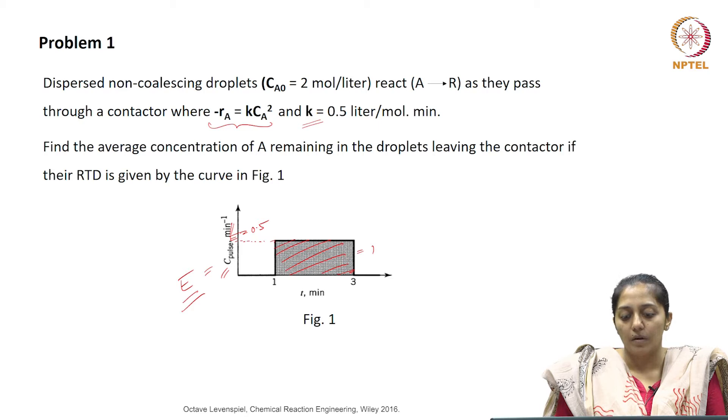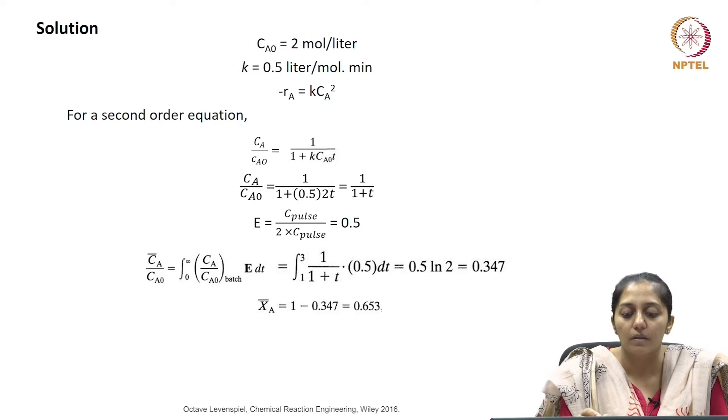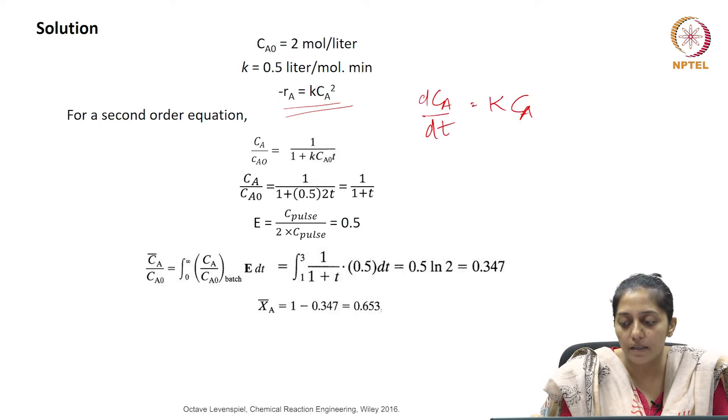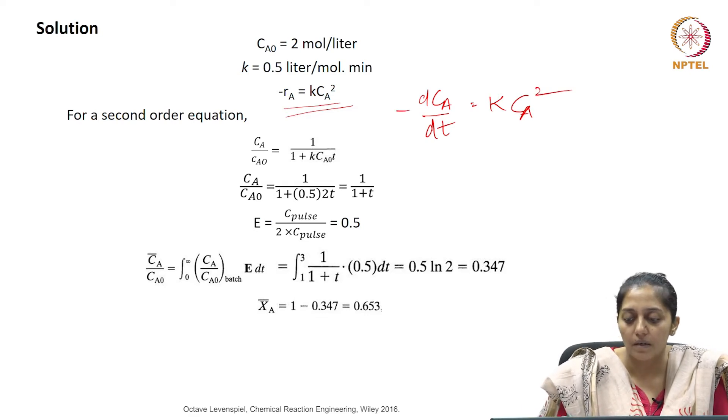We need to find out the residual concentration of A after the reaction, after it comes out of the contactor. The reaction rate constant is given, it is a second order reaction rate. The initial concentration is known. So dCa by dt is kCa square, with a negative sign since it is a reactant.